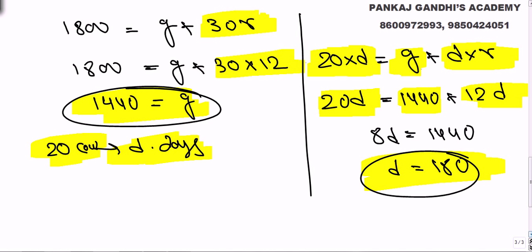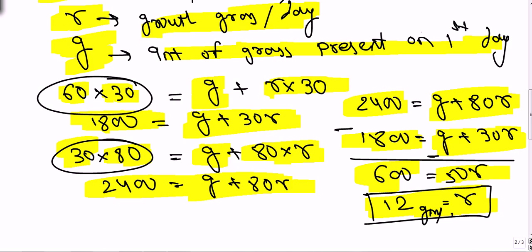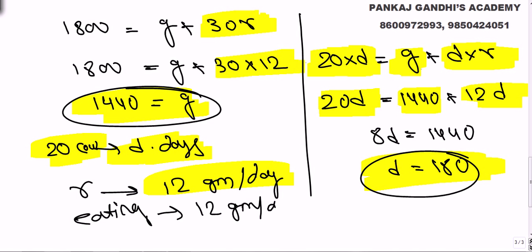Second part: what is the maximum number of cows that can be fed for an infinite time period? We know r = 12 grams per day. If grass grows at 12 grams per day and eating is also 12 grams or less per day, the grass will never run out. Each cow needs 1 gram per day, so the maximum number of cows is 12.